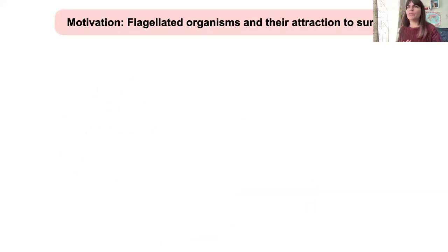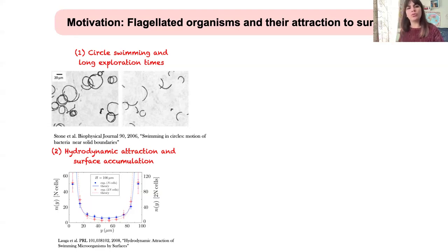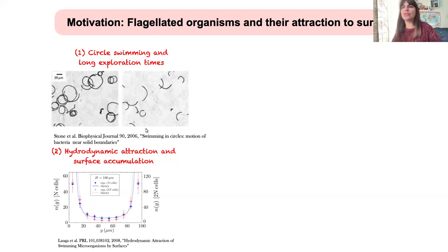Our motivation is principally that microswimmers, when they are close to surfaces or interfaces, tend to accumulate — they feel an attraction towards them. This accumulation may be due to different contributions. One is purely hydrodynamic: when close to non-slip surfaces, they perform circular swimming near the surface. This long exploration towards surfaces generates accumulation in the walls.